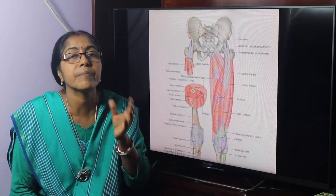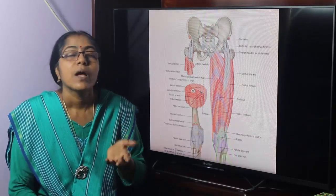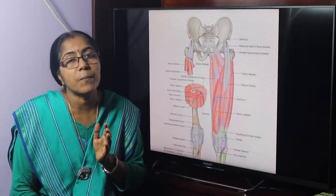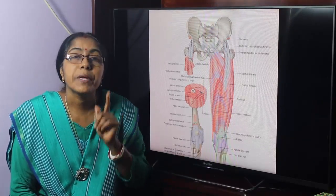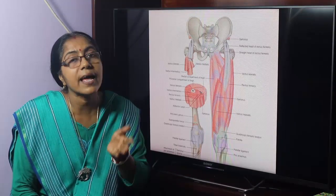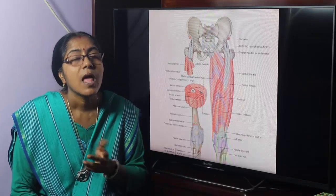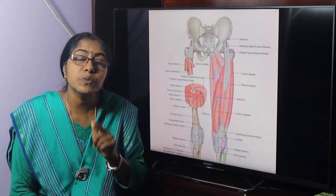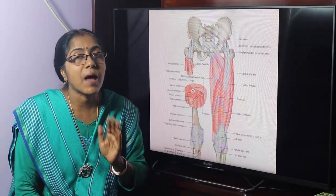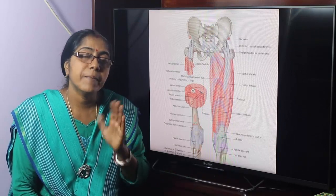These are the muscles of the anterior compartment. The nerve of the anterior compartment is the femoral nerve. The femoral nerve is L2, L3, L4. It is the largest branch of the lumbar plexus. This compartment is responsible for extension of the knee joint.